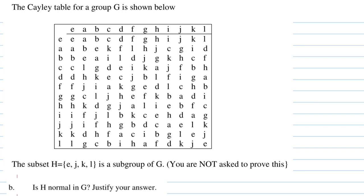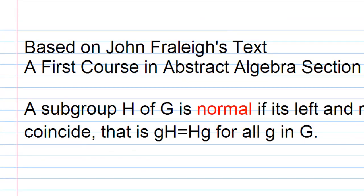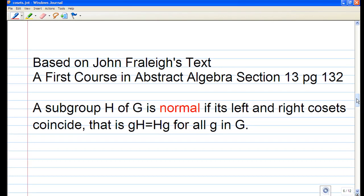First, let's recall what it means by a normal subgroup of G. According to John Fraleigh's text, A First Course in Abstract Algebra, Section 13, page 132, it says that a subgroup H of G is normal if its left and right cosets coincide, that is gH=Hg for all g in G.